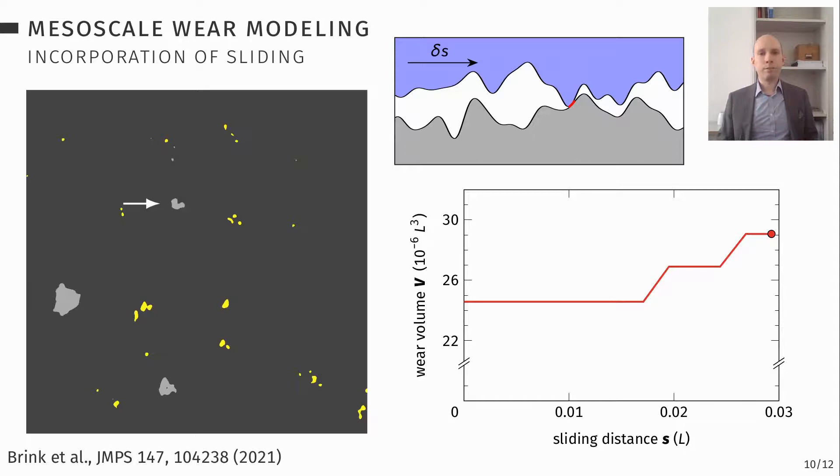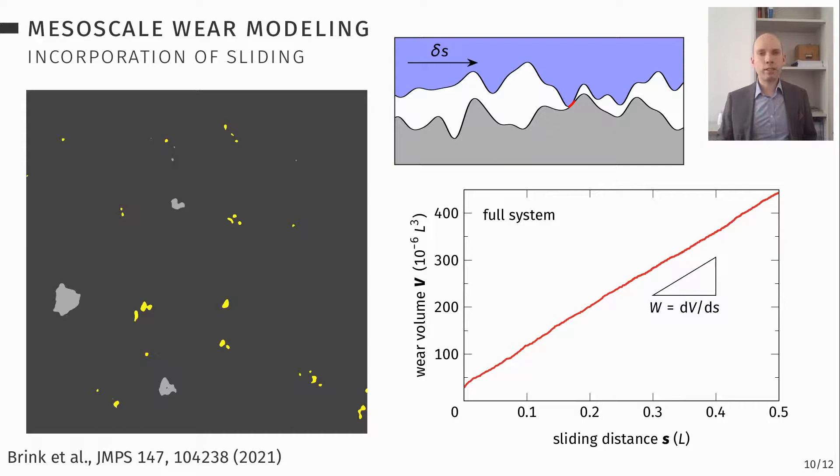So you get a nice wear volume over sliding distance graph. It looks a bit weird. But it looks a bit weird because we were looking at an excerpt of the surface over a small sliding distance. If you look at the full system over long sliding distance, you get a nice linearity between wear volume and sliding distance, the slope of which is the wear rate.